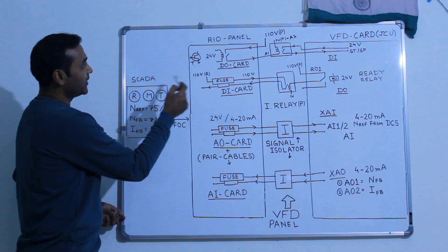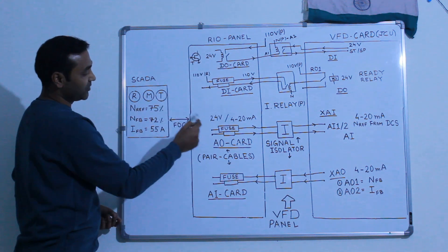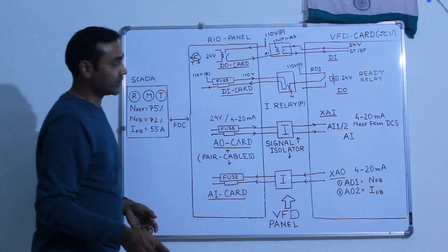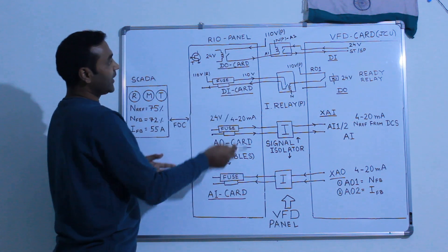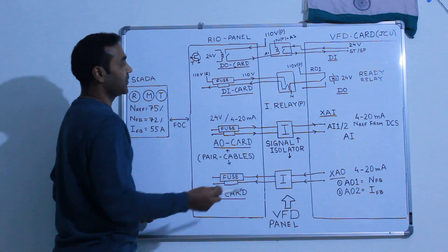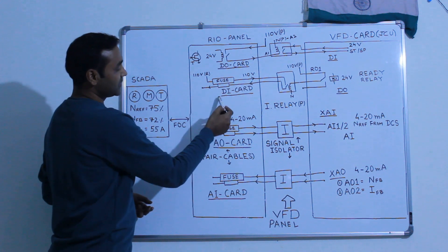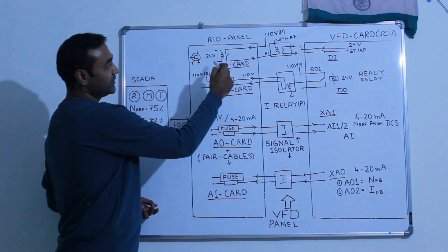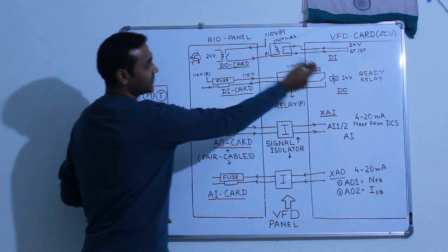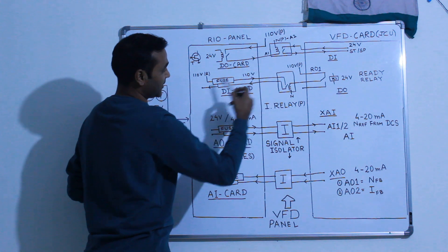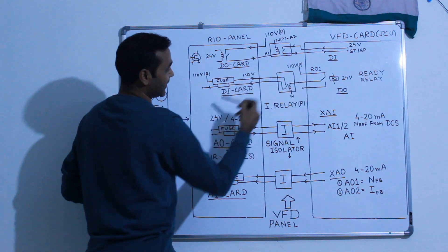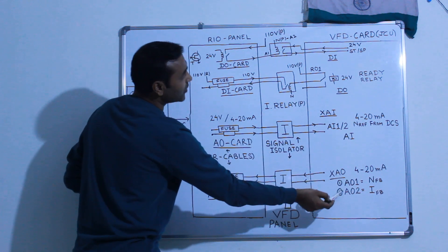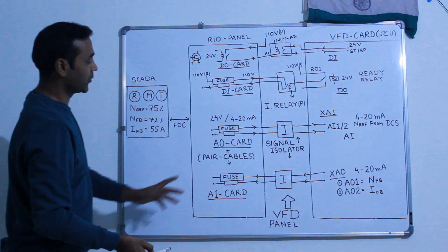Communication between SCADA or PLC and RIO panel happens with FOC, fiber optic cable. In the RIO panel you can see there are different cards - this is digital output card, this is digital input card, analog output card and analog input card. What is digital output for RIO panel becomes digital input for VFD, just vice versa. Here you can see DO-DI, DI-DO. Analog output becomes analog input for the card, and what becomes analog output for VFD card becomes analog input for RIO panel.